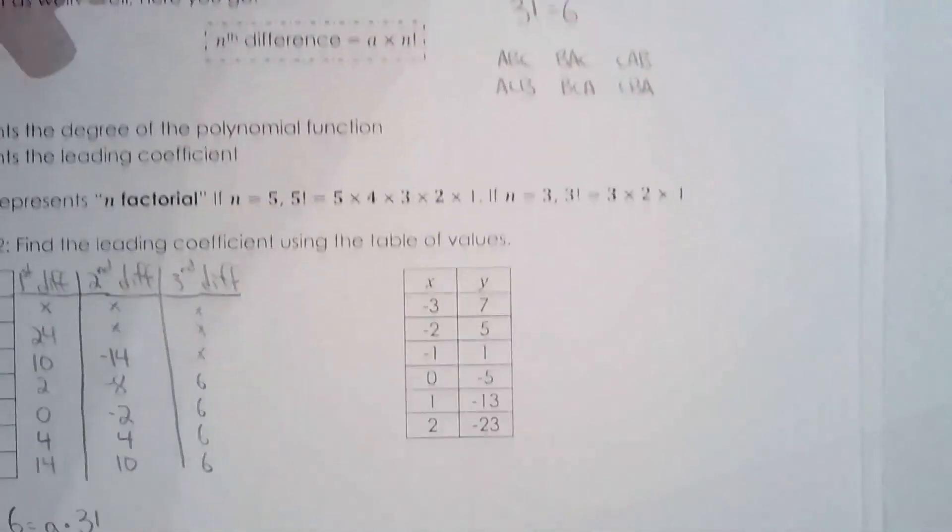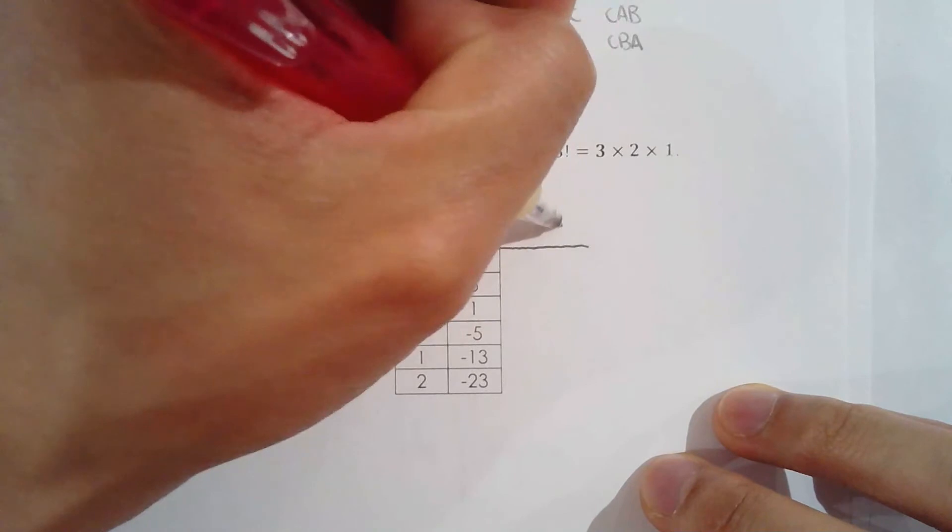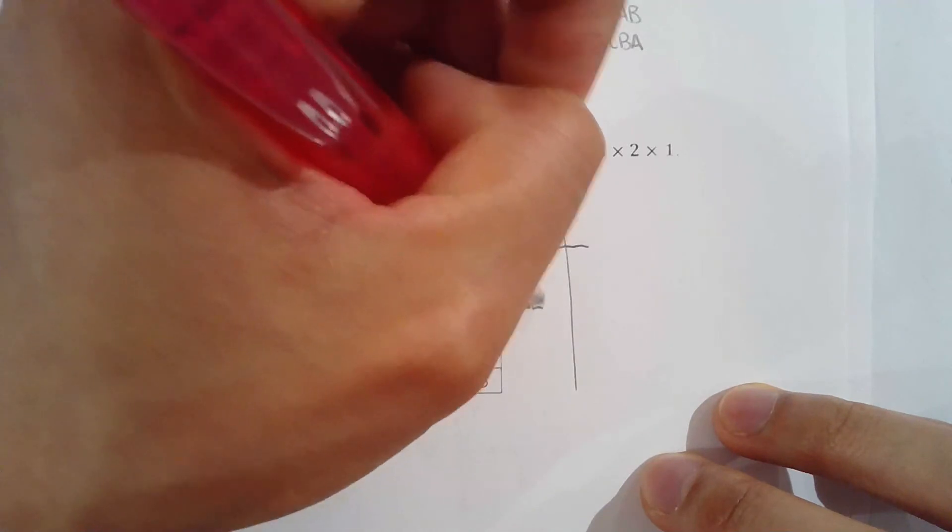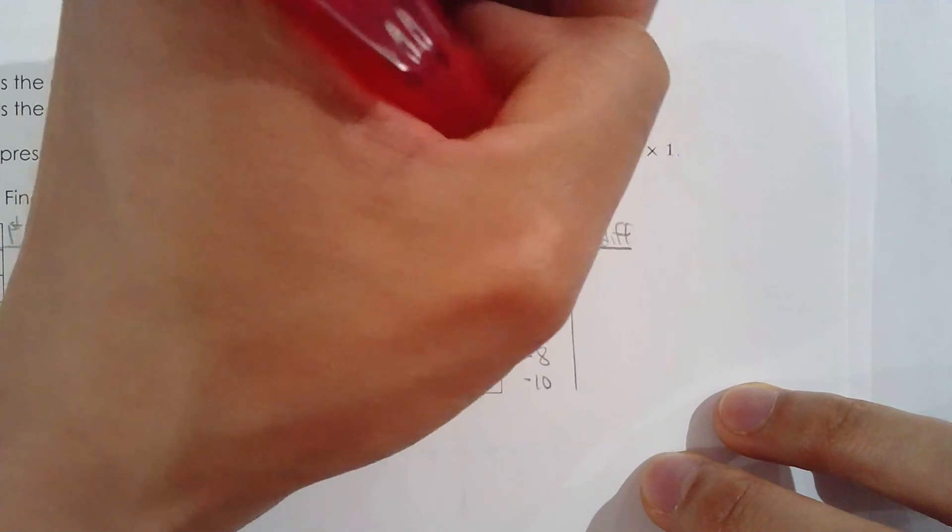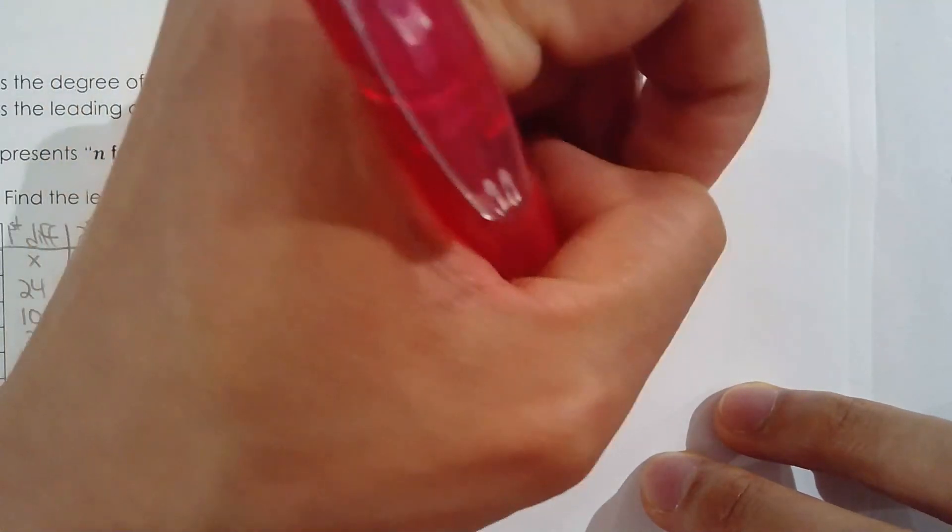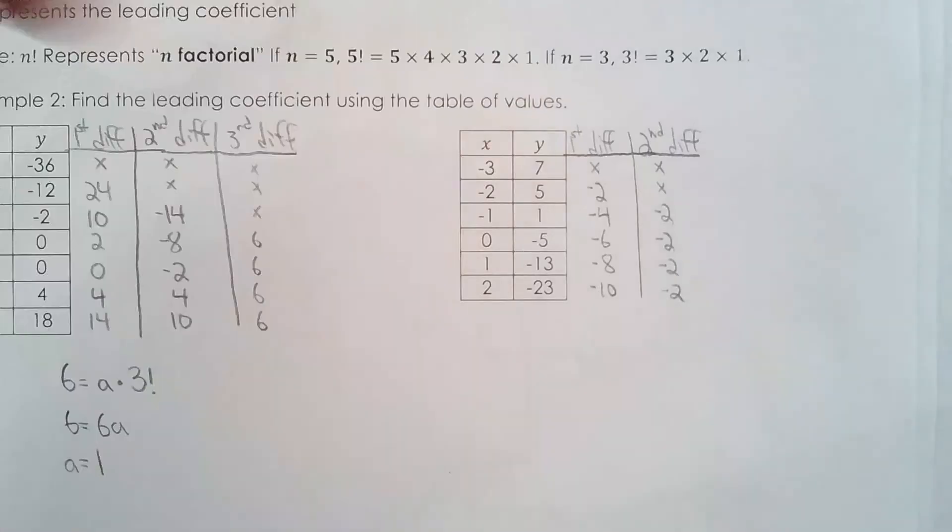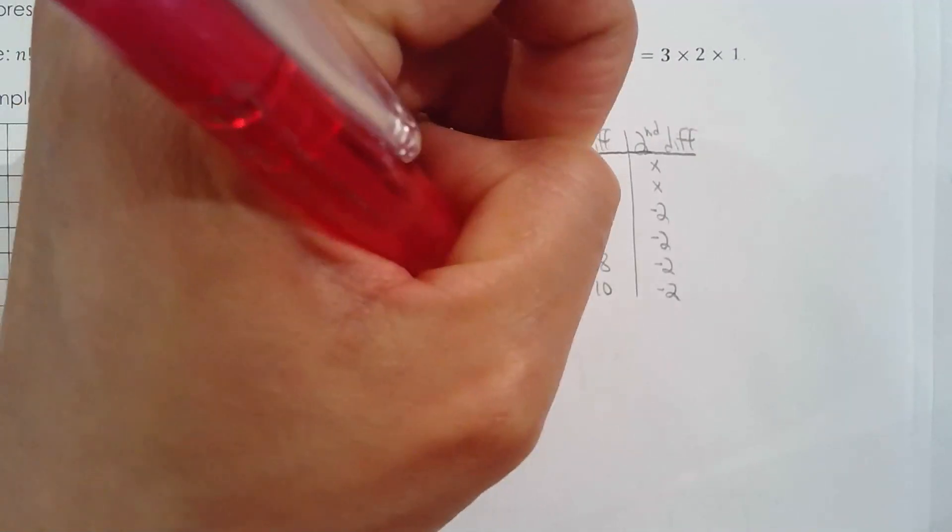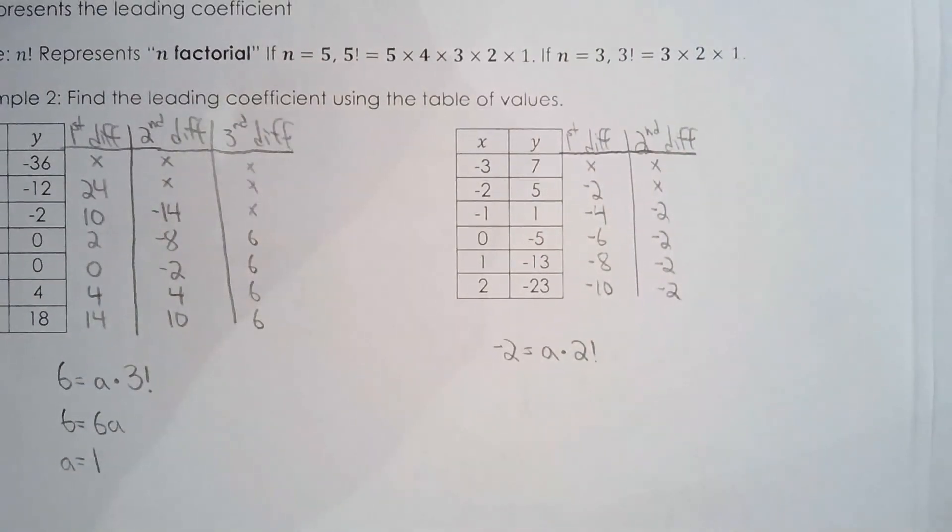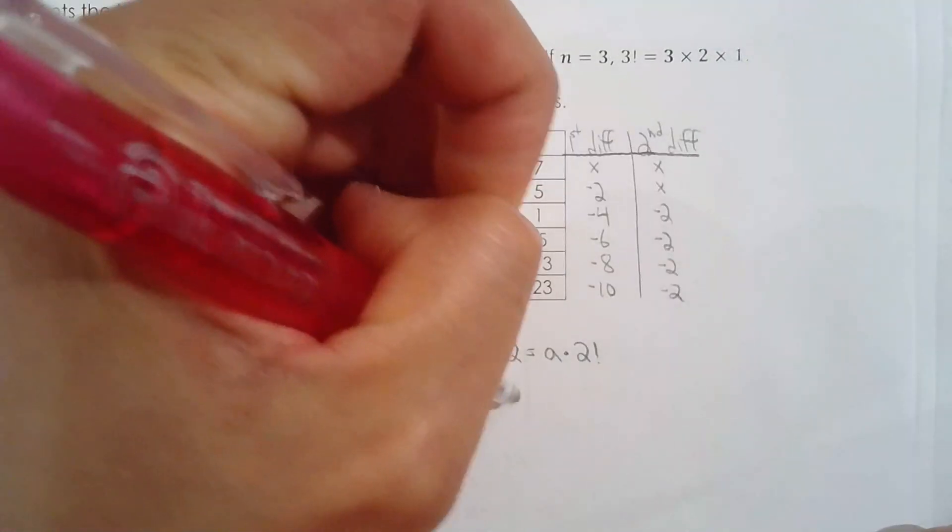Let's do this one here. Down 2, down 4, down 6, down 8, down 10, second differences. Down 2, down 2, down 2. Beautiful. So the degree is 2 because the second differences are constant. So use the formula, the nth difference is equal to A, the leading coefficient, times n factorial, where n in this case is 2. 2 factorial is 2, because 2 times 1 is 2. So A is equal to negative 1.